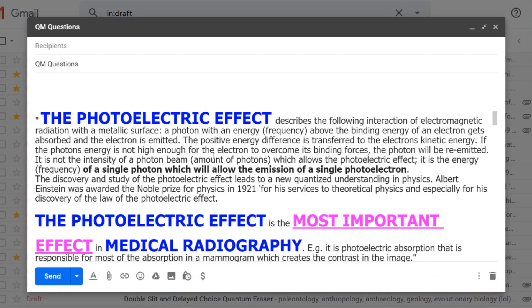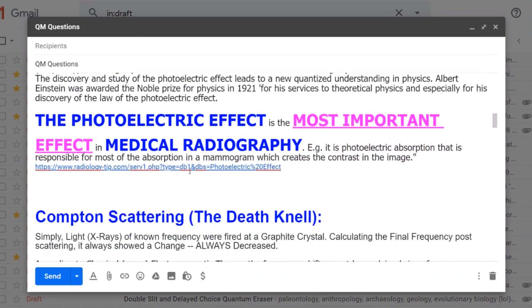The discovery and study of the photoelectric effect leads to a new quantized understanding in physics. Albert Einstein was awarded the Nobel Prize for physics in 1921 for his services to theoretical physics and especially for his discovery of the law of the photoelectric effect. The photoelectric effect is the most important effect in medical radiography. For example, it is the photoelectric absorption that is responsible for most of the absorption in a mammogram, which creates the contrast in the image.